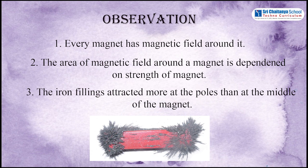Observation: Every magnet has magnetic field around it. The area of magnetic field around a magnet is dependent on strength of magnet. The iron fillings attracted more at the poles than at the middle of the magnet.